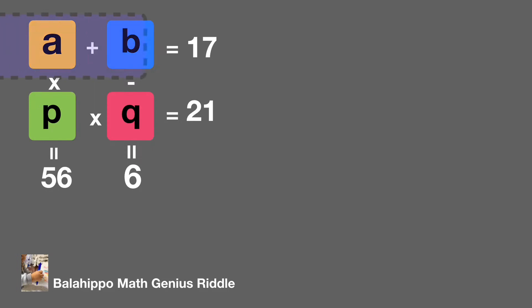Then the first horizontal equation says that A plus B equal to 17. We name it equation 1.